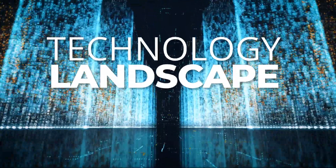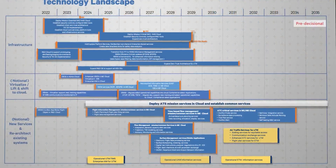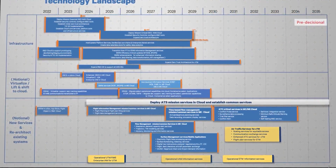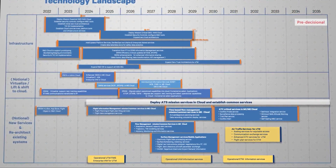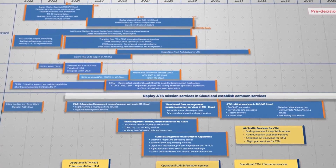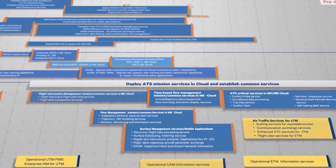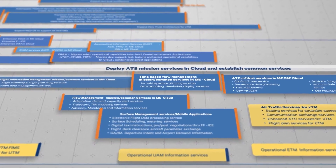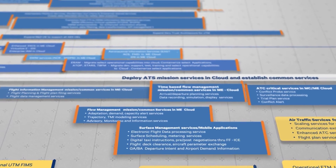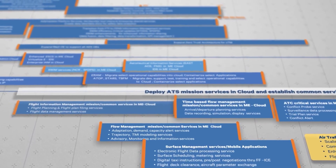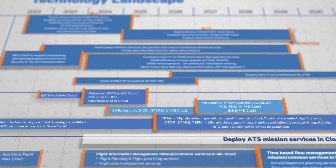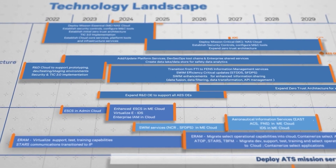The Technology Landscape depicts planned infrastructure enhancement activities to support building services-based architecture for the NAS, incorporating the modern cybersecurity architecture required for enhanced and secure information exchange. Once these activities are further researched and validated, it will allow the FAA to leverage ubiquitous data and enable efficient data sharing, providing a foundation for the integration of diverse vehicle types and operations in the NAS, while also enhancing the traditional ATS.